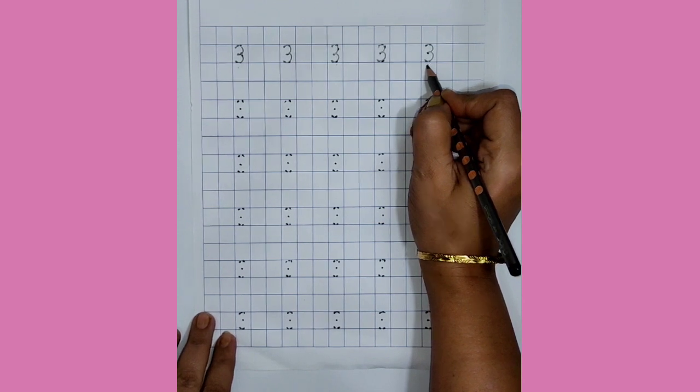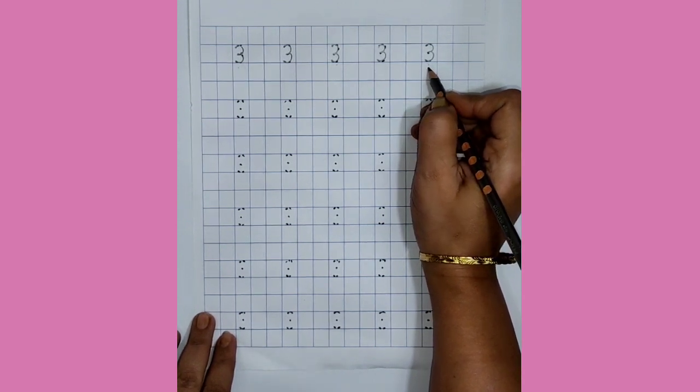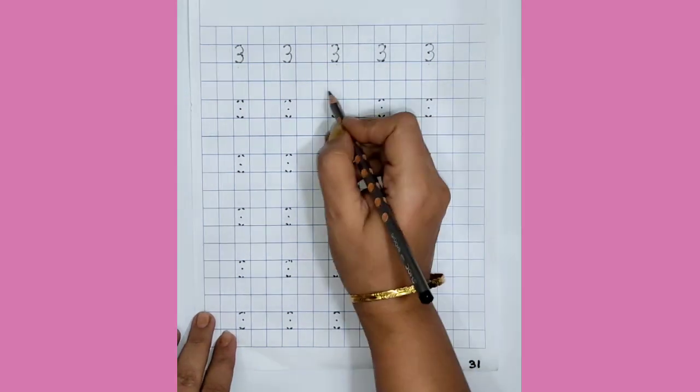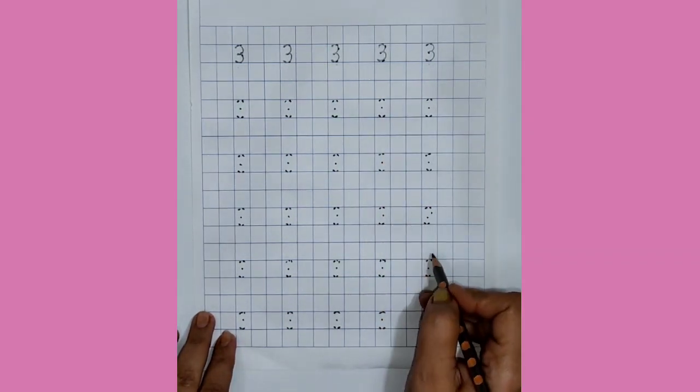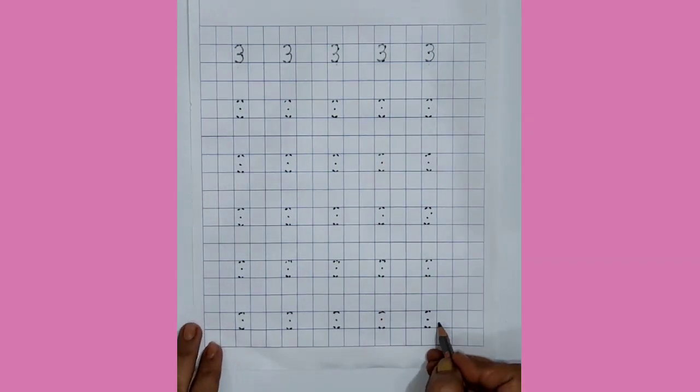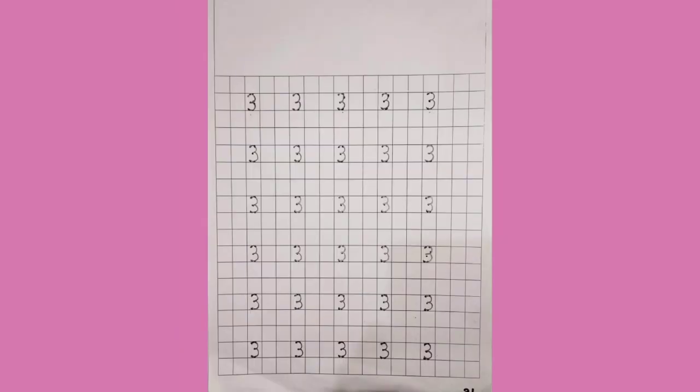Very good, babies. So babies, like this, you will do tracing of number 3 on less dots with the help of your parents.